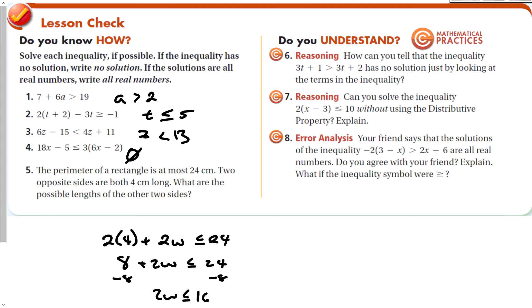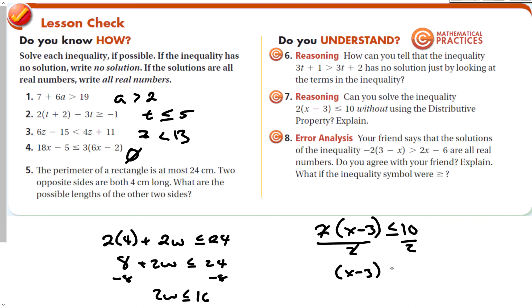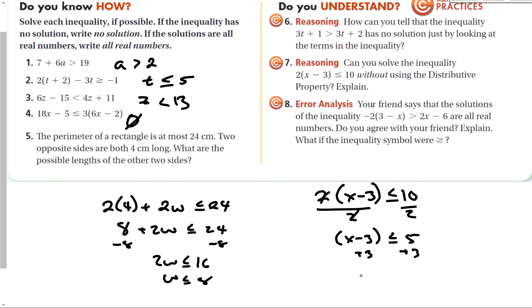Can you solve the inequality 2(x minus 3) is less than or equal to 10 without using the distributive property? You can, provided the other side is divisible by 2 — divide out the 2 first to get x minus 3 is less than or equal to 5, then add 3 to both sides, giving x is less than or equal to 8. Sometimes that's faster, though sometimes it's better to use the distributive property since the two terms might give you a fraction or decimal.